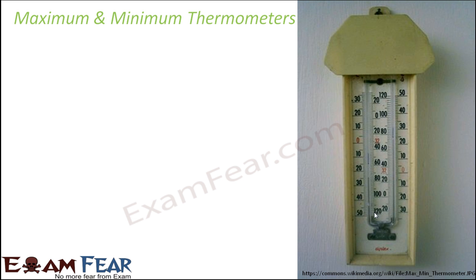Looking at the picture more clearly, you can see the U-shaped glass tube — shaped like the English alphabet U. On both sides of the U, there are two separate temperature scales, one along each arm. One arm measures maximum temperature, the other measures minimum temperature. Both arms terminate in sealed glass bulbs at the ends — they are not open but sealed.